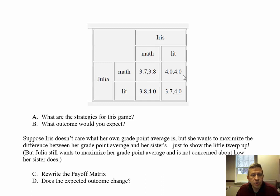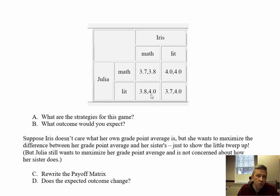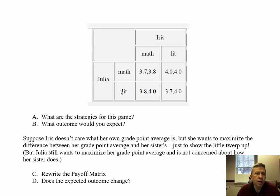For Iris, if they both choose math, she could go from 3.8 to 4.0 by changing. You only need one player to want to change to make an outcome not a Nash Equilibrium — here both want to change. If Julia chooses lit and Iris chooses math, this is also a Nash Equilibrium. Julia will not want to change from 3.8 to 3.7, and Iris is getting a 4.0 either way so has no incentive to switch. So this game has two Nash Equilibria: Julia chooses lit and Iris chooses math, or Julia chooses math and Iris chooses lit.